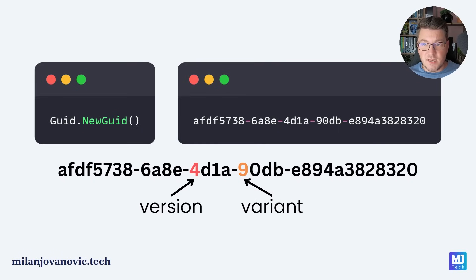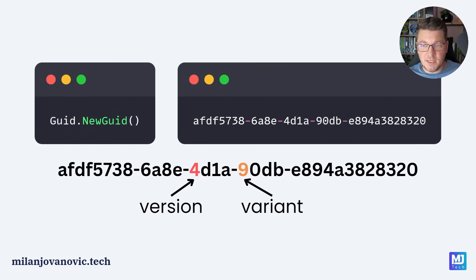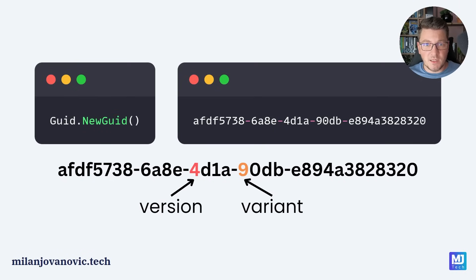You can think of a GUID as a randomly generated 16-byte long number, and the value behind something like this is that you can use it for unique identifiers. In the .NET world it's not uncommon to use GUIDs for primary keys inside of a database. Most databases also support this type natively, and it's particularly valuable in distributed systems where you need to create object IDs that are unique across a distributed system. With a GUID, the chances of a collision are relatively low, so it's often used in something like microservices.